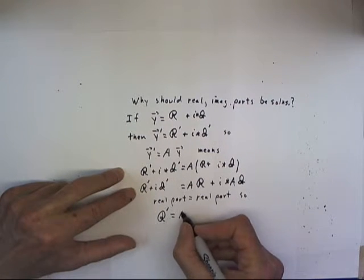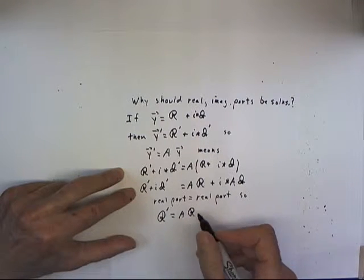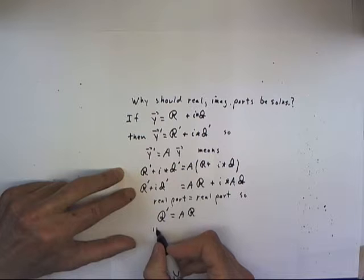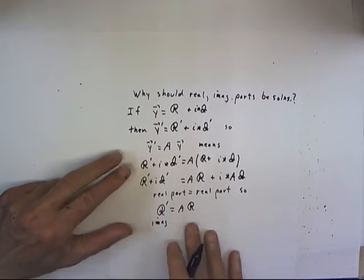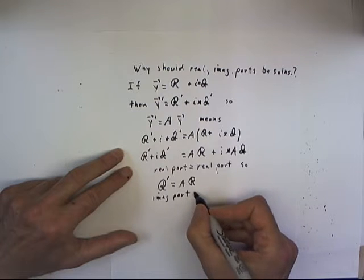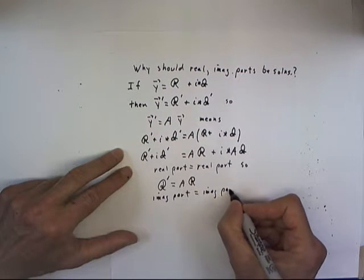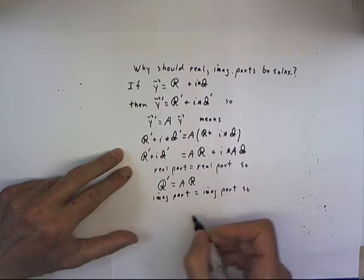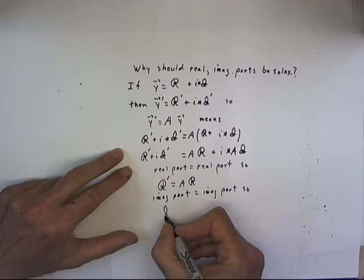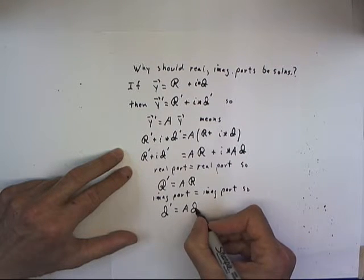the real part on this side is equal to A multiplied by the real part on this side. And the imaginary part, and the imaginary part, equals the imaginary part, so I prime equals A I.